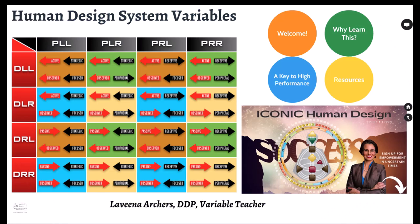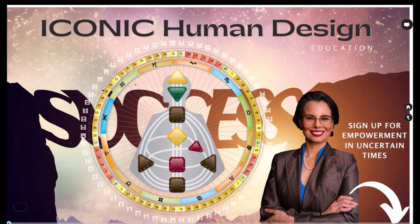I'm Lovina Archers. I'm a differentiation degree practitioner and also a variable teacher. One of the things I want to help you with is understanding this map over here on the left-hand side. You can see these different squares — 16 different variable groupings. It would be supportive if you already knew at least the fundamental foundations of your human design. Living your design is the first step, and a foundation analysis before moving forward is the requirement for going through this material with me.